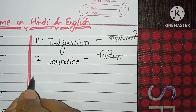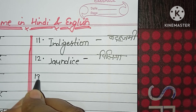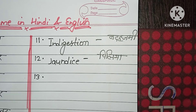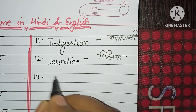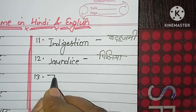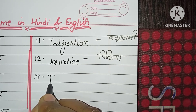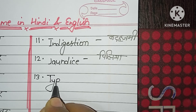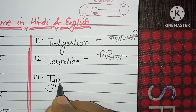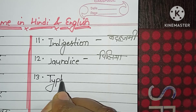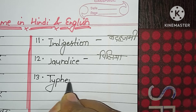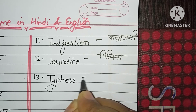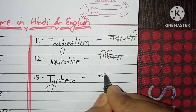Number thirteen: Typhoid. T-Y-P-H-O-I-D. Typhoid. Kalajur.